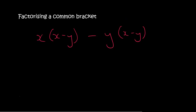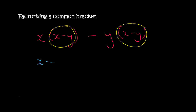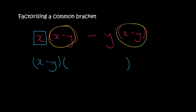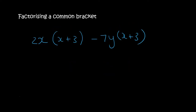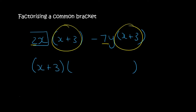With this one, looking at the two terms, x minus y is common and that's all — there's nothing else that's common. So here we only take out x minus y. In the first term you're still left with an x, and in the second term you're still left with minus y. In the next one we've got an x plus 3 and an x plus 3 in common. 2 is not in common with 7, so we can't take anything else out. All that we can take out is x plus 3, and then in the first term we're still left with 2x, then minus 7y.